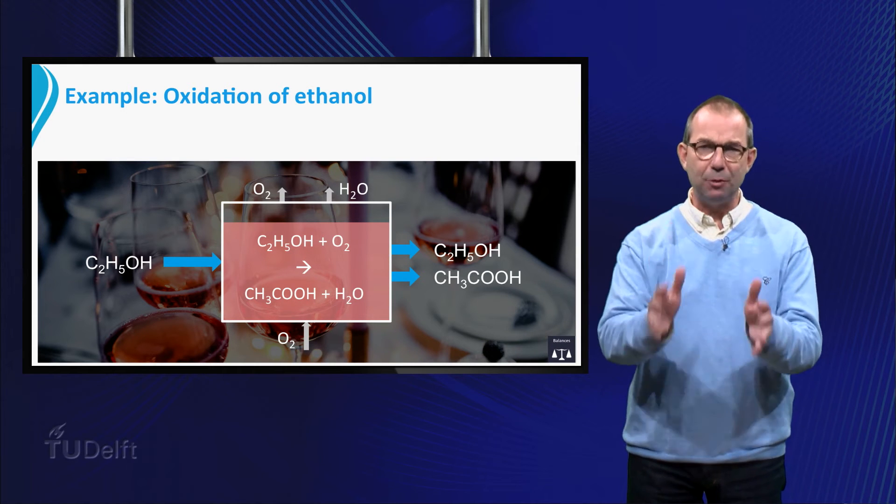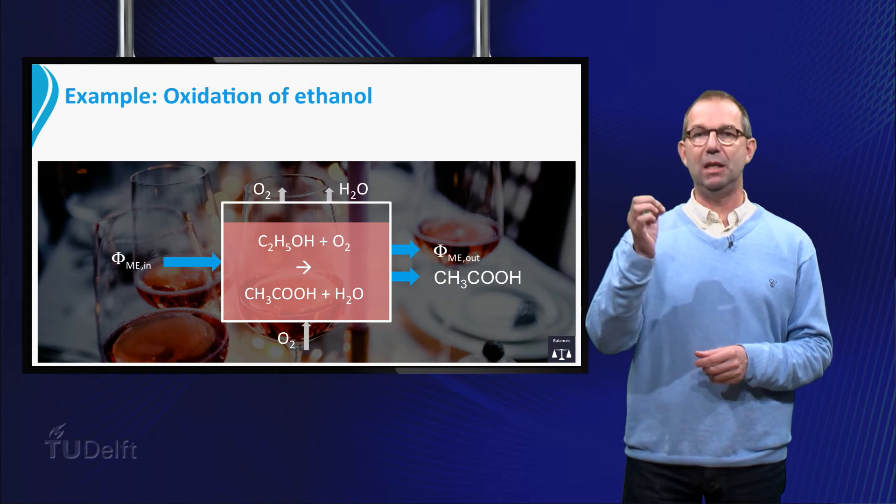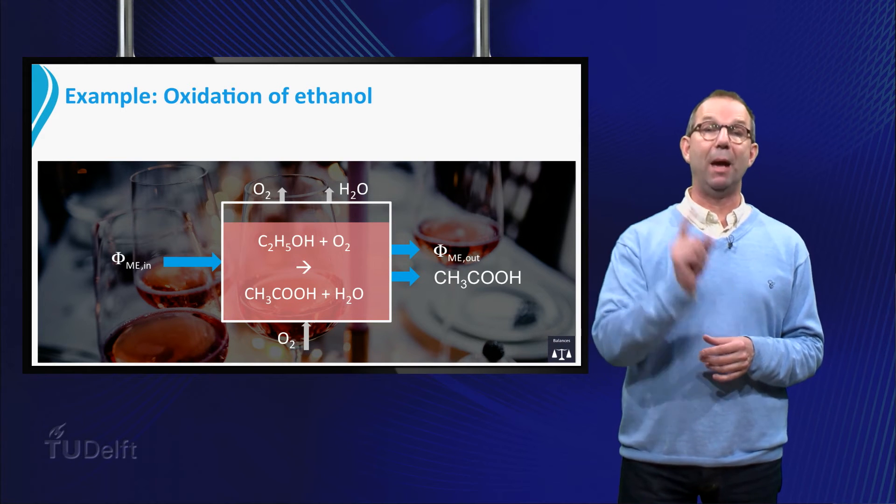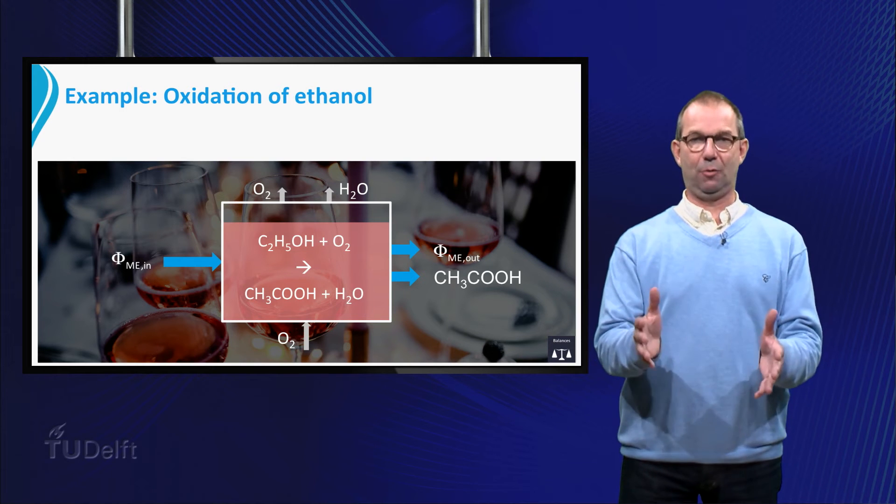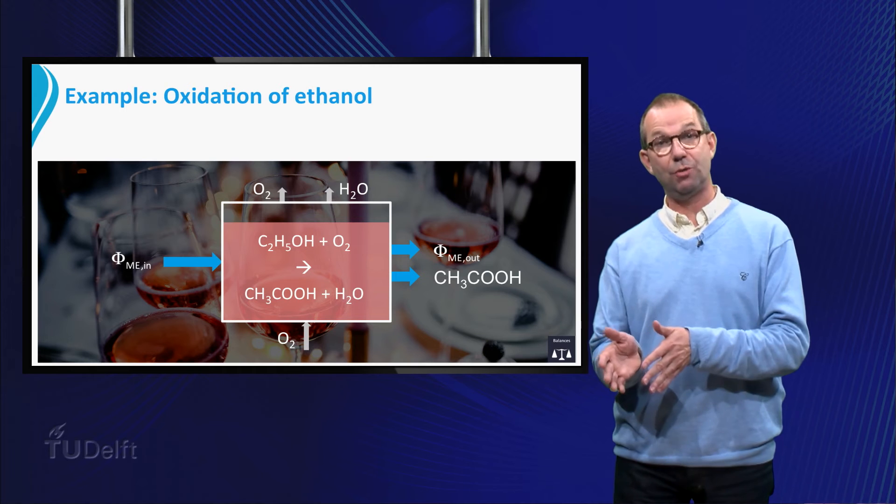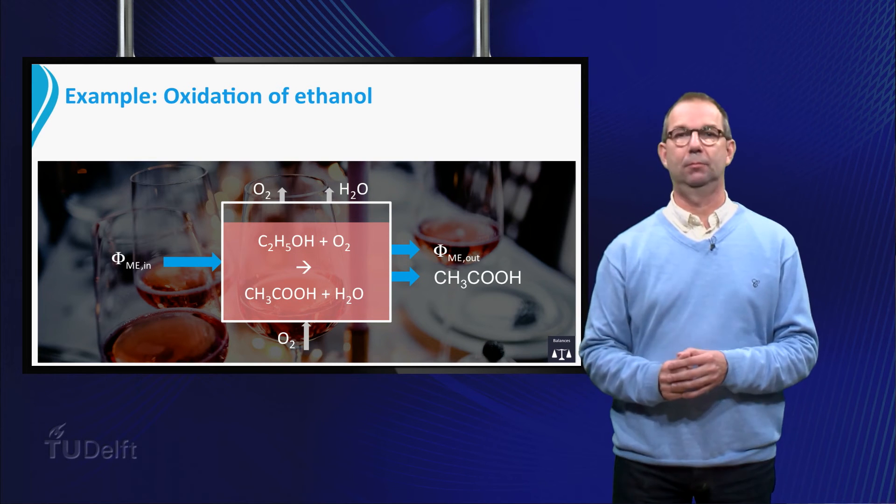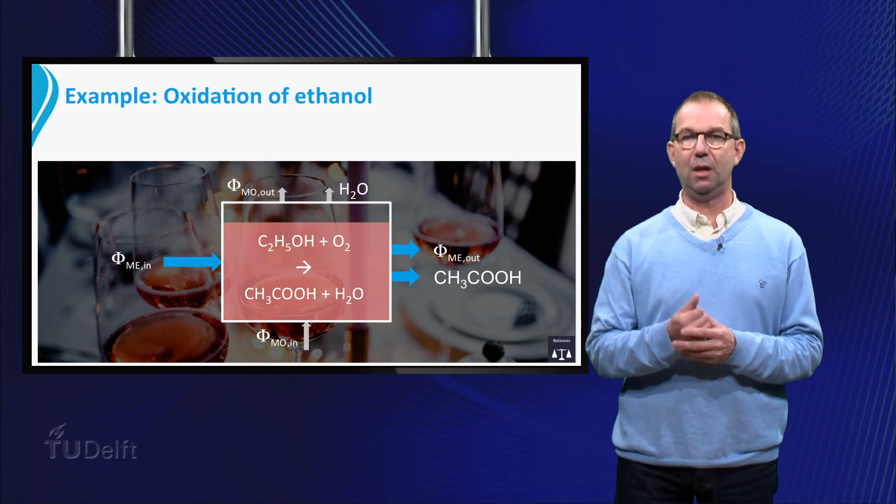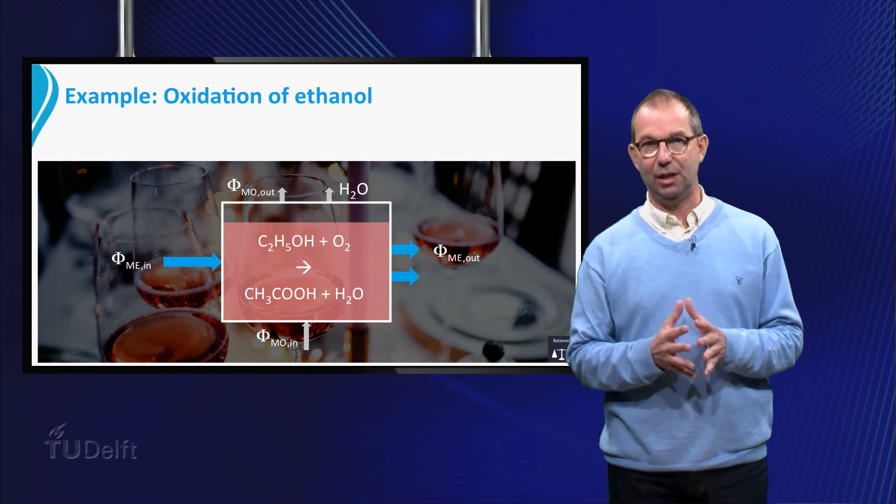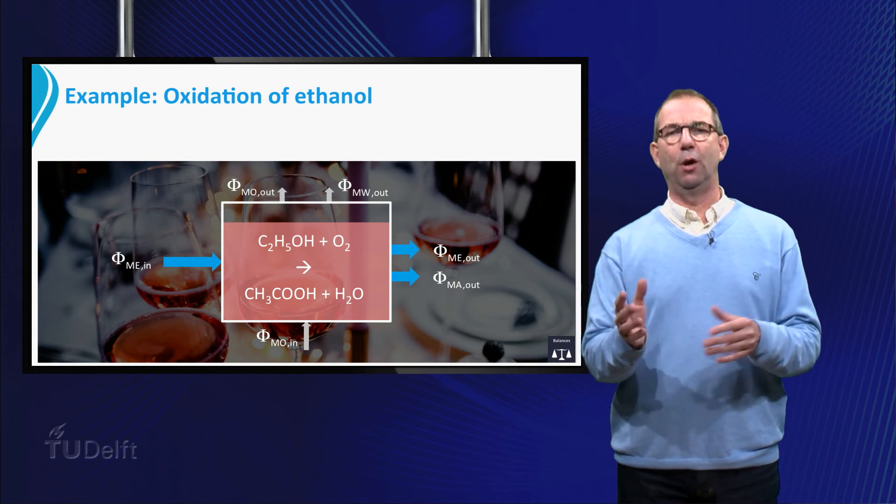We will change our notation so that it better reflects the flows. You see that the mass flow rate of ethanol is indicated by phi sub Me in and phi sub Me out. Both these flows have units kg ethanol per second. They indicate how many kg ethanol in a second enter or leave the reactor. The subscript Me denotes M for mass and E for ethanol. We use this to indicate that it is a mass flow of ethanol. The mass flow rates of oxygen are similarly written as phi sub Mo in and phi sub Mo out. And the mass flow rate of the produced acetic acid and water by phi sub Ma out and phi sub MW out. We write them as outflows as both leave the reactor.